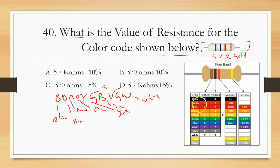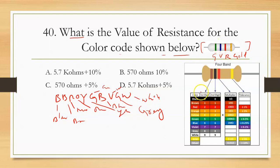So green is 5, violet is 7, red is the multiplier — red is 10² = 100. So the color code gives: first band green = 5, second band violet = 7, multiplier red = 100.